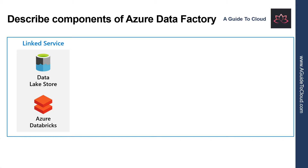Data Factory moves data from a data source to a destination. A linked service provides the information needed for Data Factory to connect to a source or destination. For example, you can use an Azure Blob Storage linked service to connect a storage account to Data Factory, or an Azure SQL Database linked service to connect to an SQL Database.